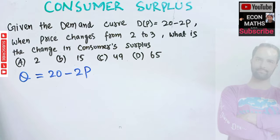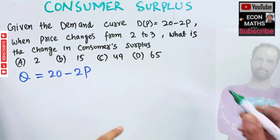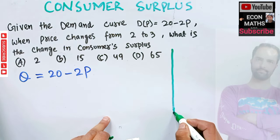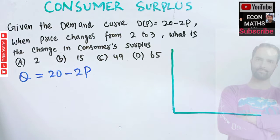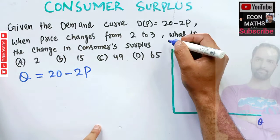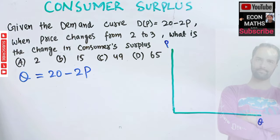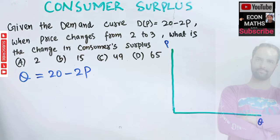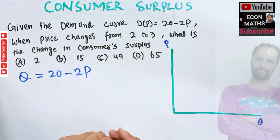Let's try to find the consumer surplus graphically, so let's draw the graph of this equation. We have quantity on the horizontal axis and price on the vertical axis. Consumer surplus is the difference between the price a consumer is willing to pay and the price he actually pays. The area between the willingness-to-pay and the actual price, below the demand curve, is the consumer surplus.